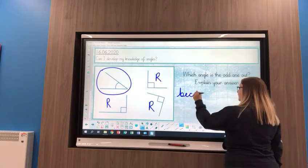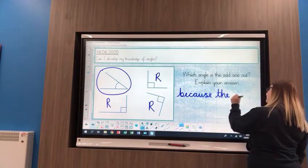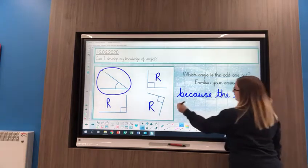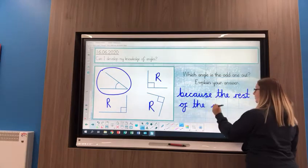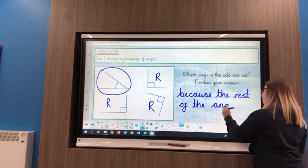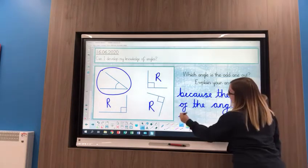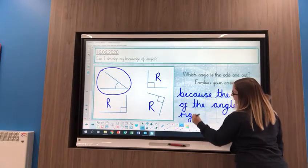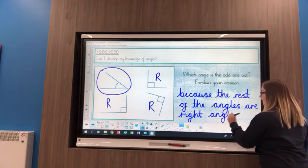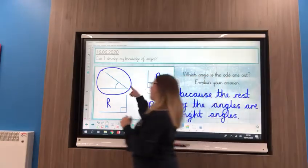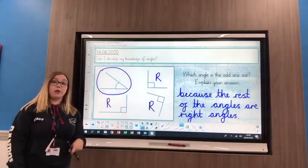It's an odd one out because the rest of the angles are right angles, and because that one is smaller than our right angle, we know that that one must be an acute angle.